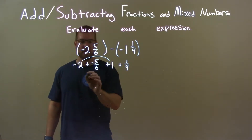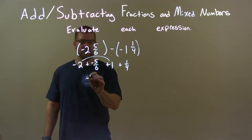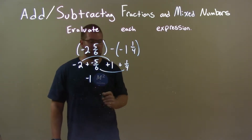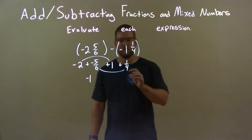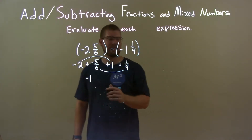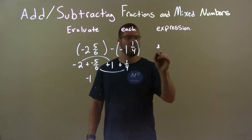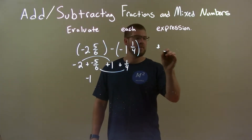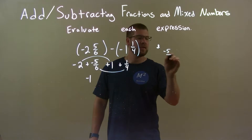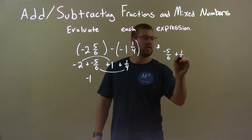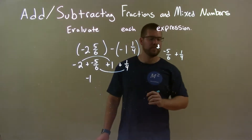For the whole numbers, negative 2 and positive 1 gives us negative 1. And for negative 5/6 plus 1/4, I need to do some more work, so I'm going to put a little note over here: we have negative 5/6 plus 1/4.